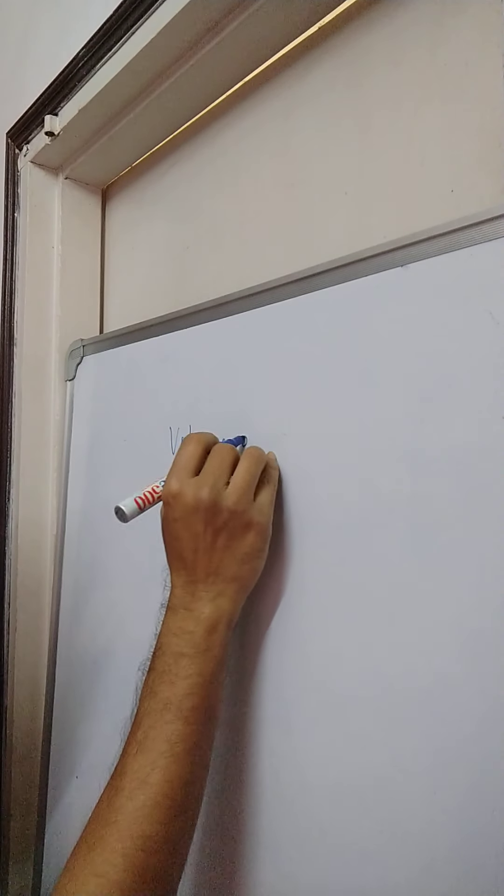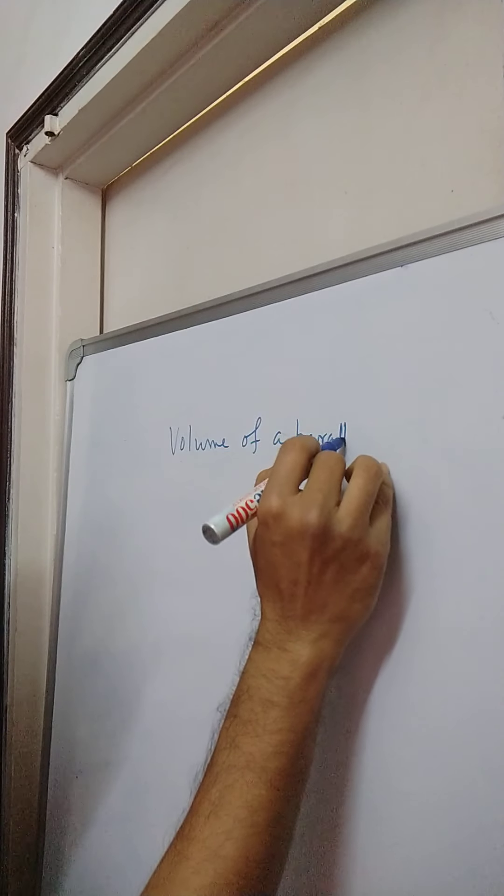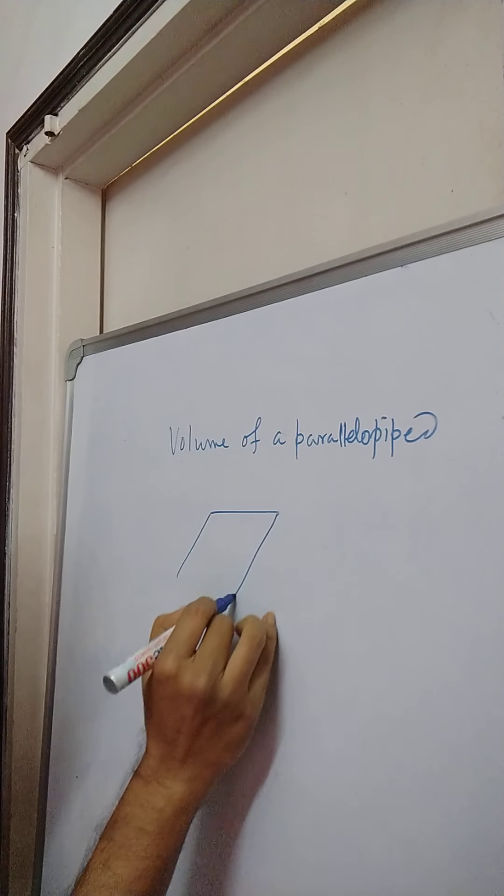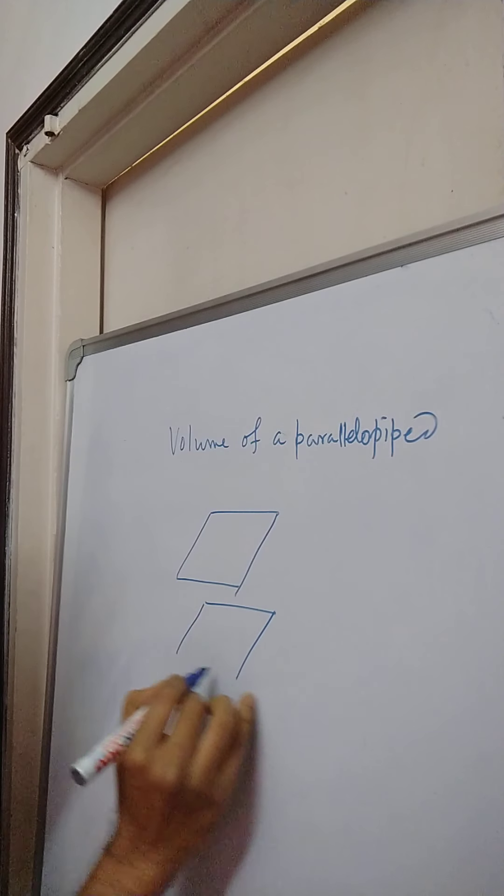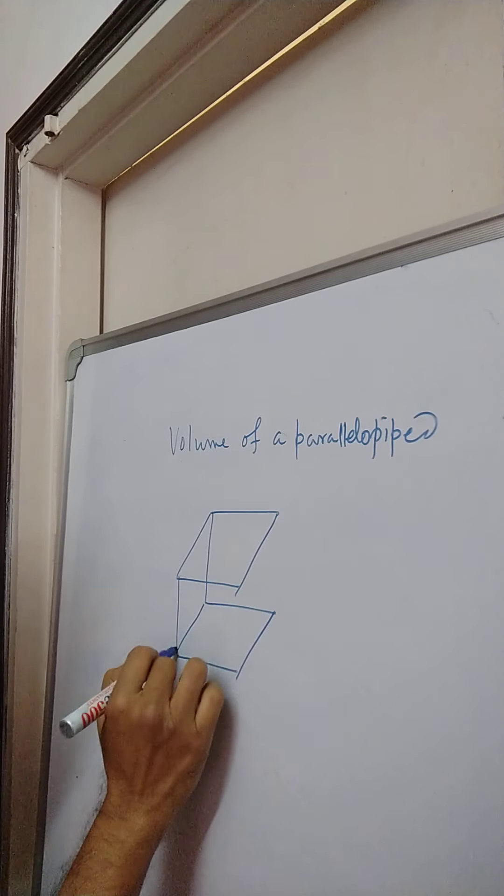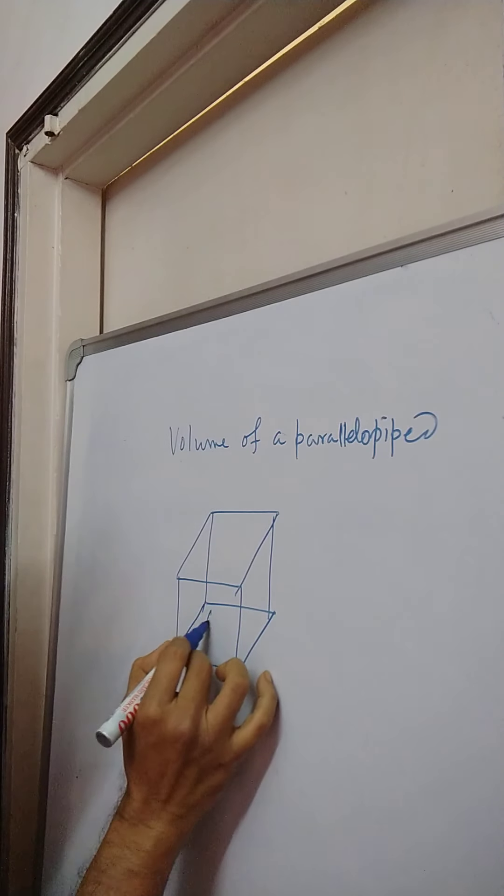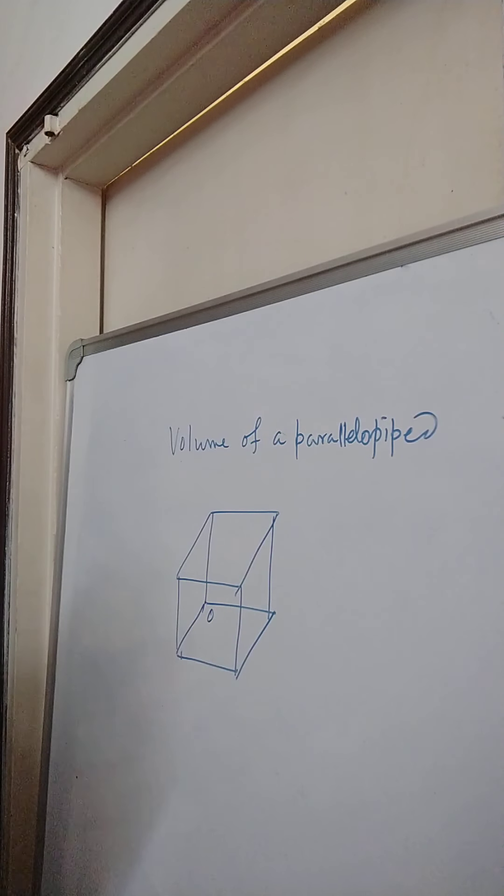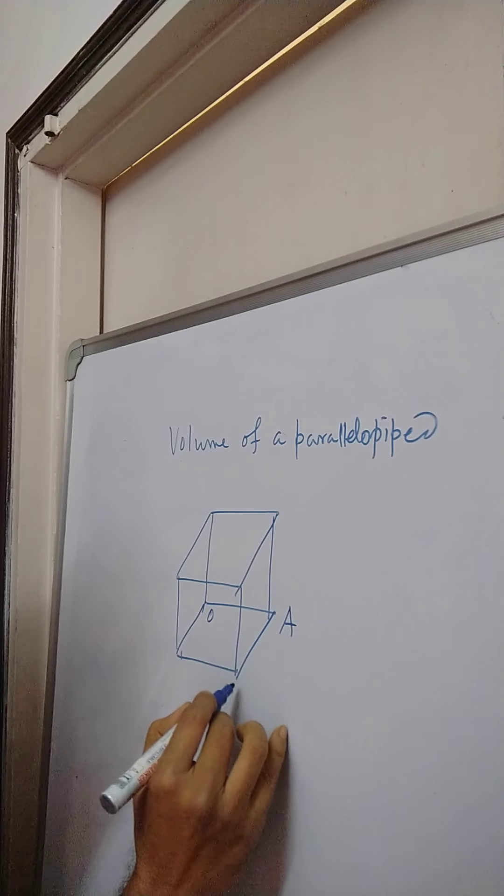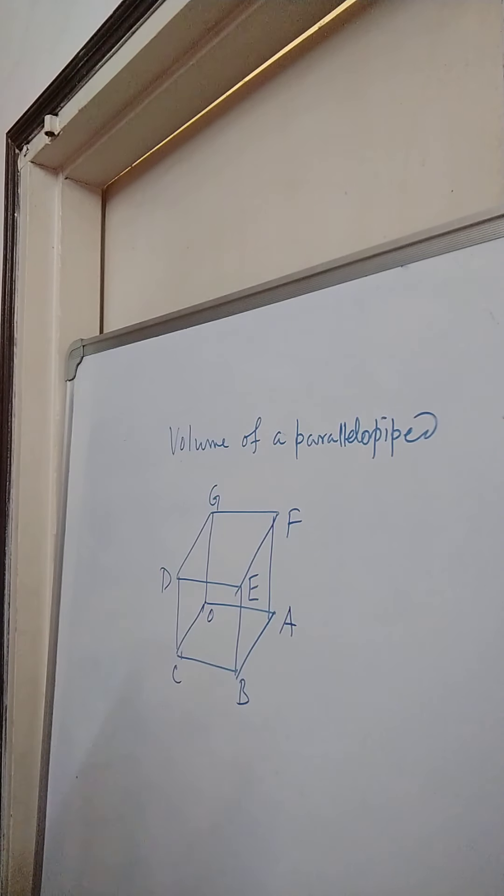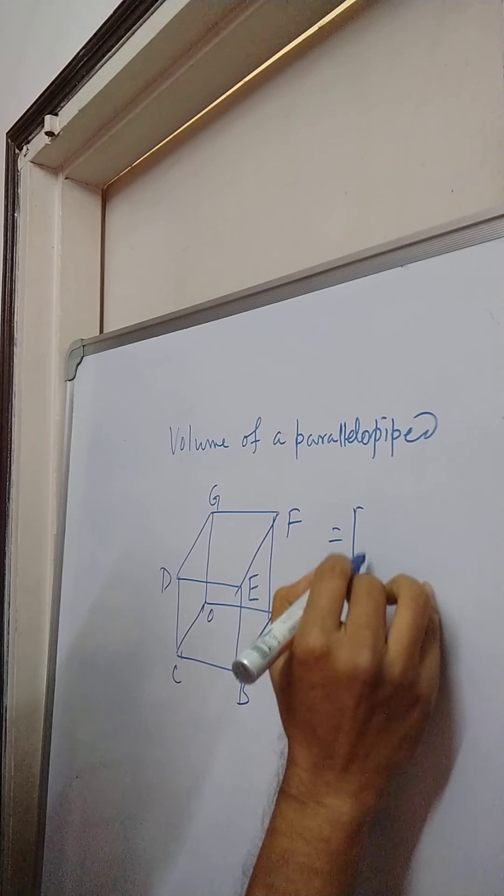Another application is finding the volume of a parallelepiped. So if we denote this point as origin and this as A, this as B, this as C, this as D, E, F, and G. So volume of this parallelepiped comes out to be box of ABC.